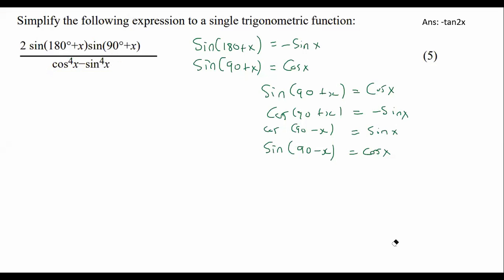Now we go fill everything in. So we said that this became negative sin x. This became cos x. And then at the bottom, let's just leave it as it is for now. What I would then do is I would multiply all of this together. And so that would become negative 2 sin x cos x.